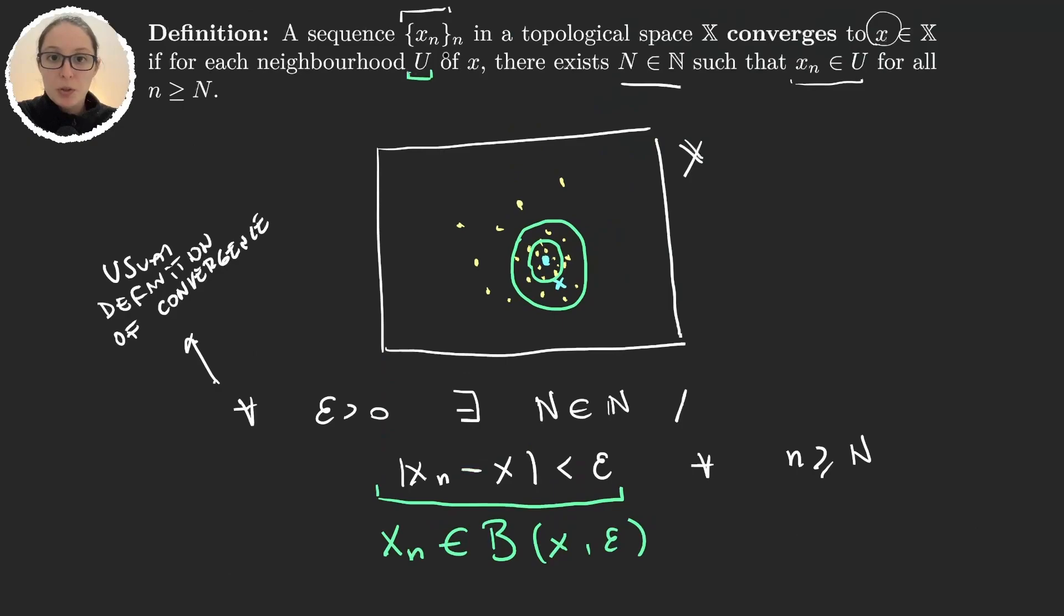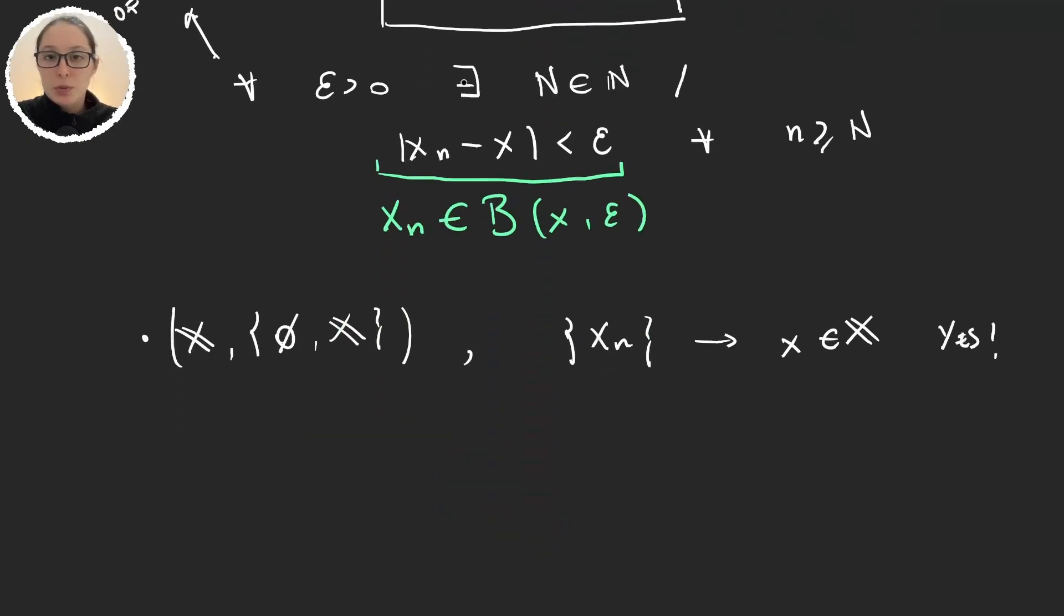Then when we want to see if the sequence converges to an element x the answer will always be yes. And the reason for this is that when we go to the definition of convergence it says for each neighborhood U of x, so there are two possible neighborhoods of x, the empty set which is not a neighborhood because it doesn't contain the element x, or the whole set. So given x, xn is an element of X for every n. And given that this X is the neighborhood that I was taking then we can say that the sequence converges to x.